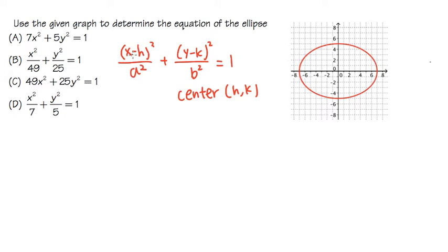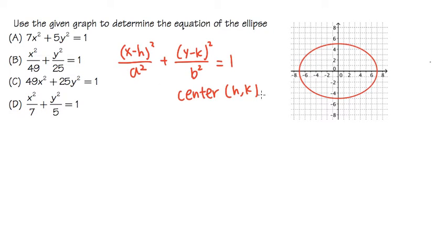The standard form is: (x minus h) squared over a squared, plus (y minus k) squared over b squared, equals 1. Note that for the ellipse, we have a plus sign in the middle. This equation applies when the center is at (h, k).